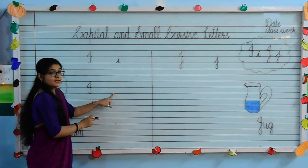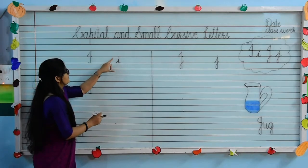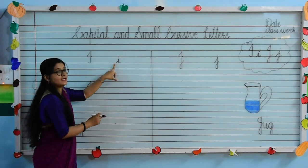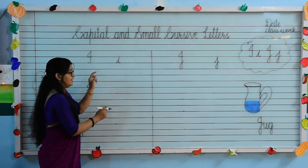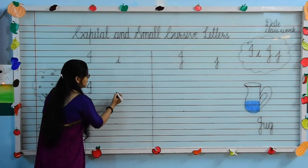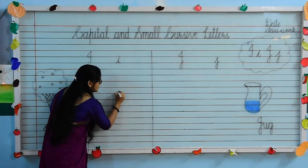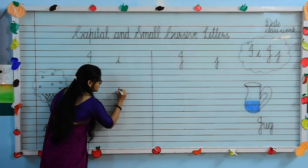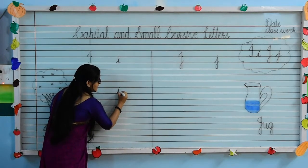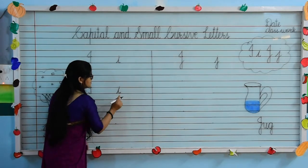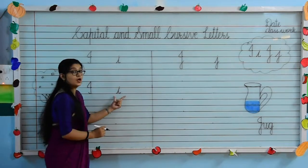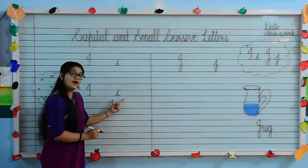Small cursive I — we will draw between the second and third line. Put your pencil on the third line, draw a slanting line like this and curve, touch the third line and dot. This is small cursive I.